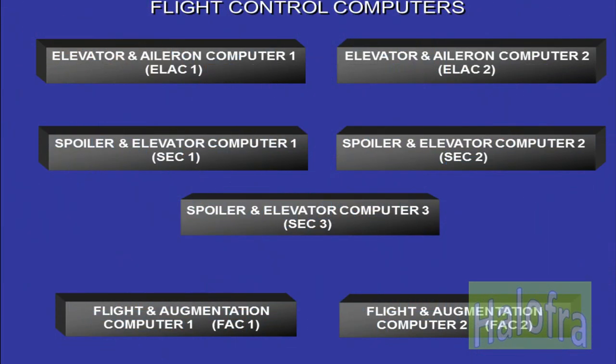The movements of the flight control surfaces are managed by seven computers: two elevator and aileron computers (ELAC), three spoiler and elevator computers (SEC), and two flight augmentation computers (FAC), which manage the rudder movements.